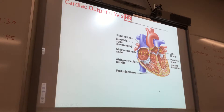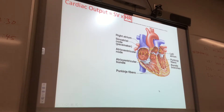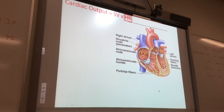If the AV node worked but couldn't get its signal to the atrial cells, they wouldn't contract. But you could still live because that extra volume from atrial contraction is a small volume. The AV node goes at 50 beats per minute — you wouldn't be able to exercise or anything. You'd have to lie around. Stroke volume would just be lower.